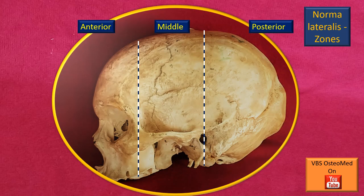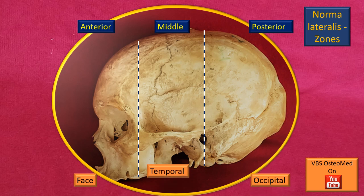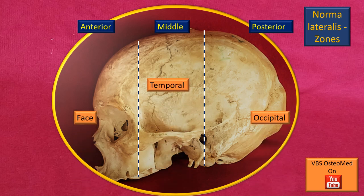You will recall in the previous video, we had divided the norma lateralis into an anterior, middle and posterior. You can also call them as the face zone, temporal zone and the occipital zone. Now we will take up the middle zone or the temporal zone in this discussion.